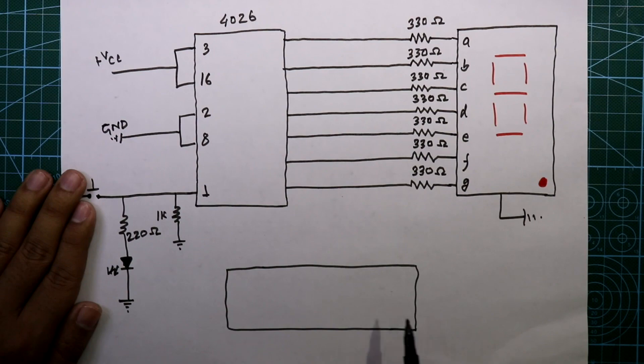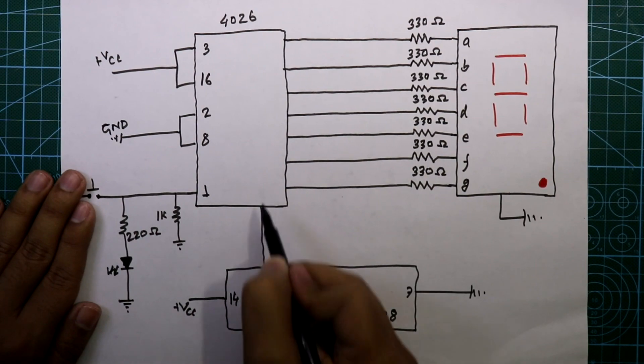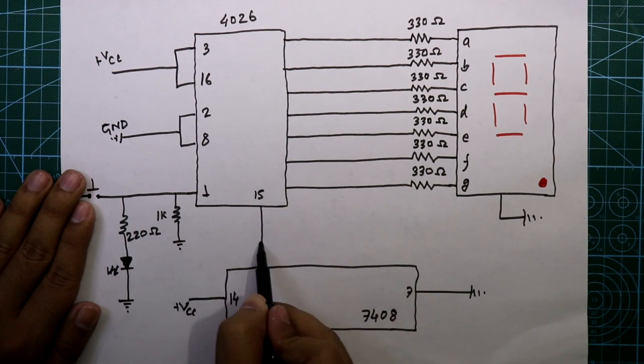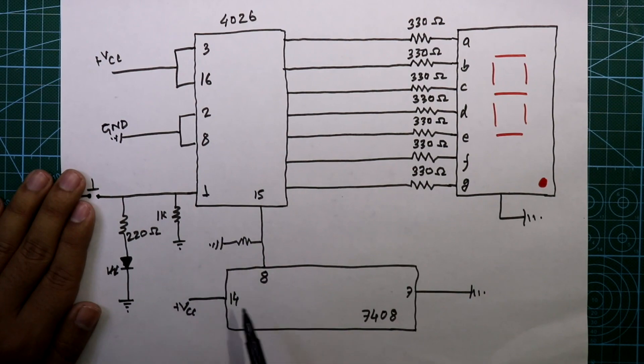Now we need another IC, 7408. Its pin number 7 is connected to ground, pin number 14 is connected to plus VCC, and its pin number 8 is connected to pin number 15 of 4026. These two are connected to ground through a 1 kilo-ohm resistor.